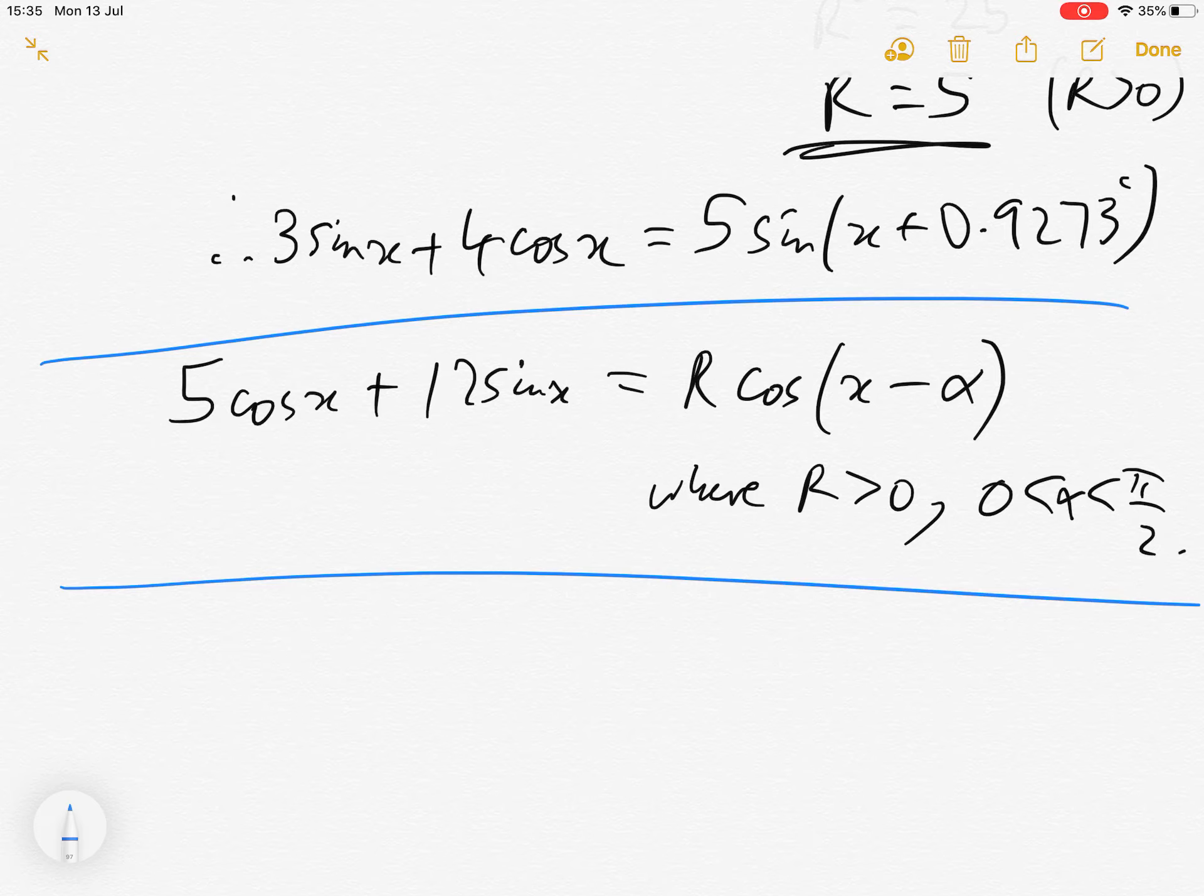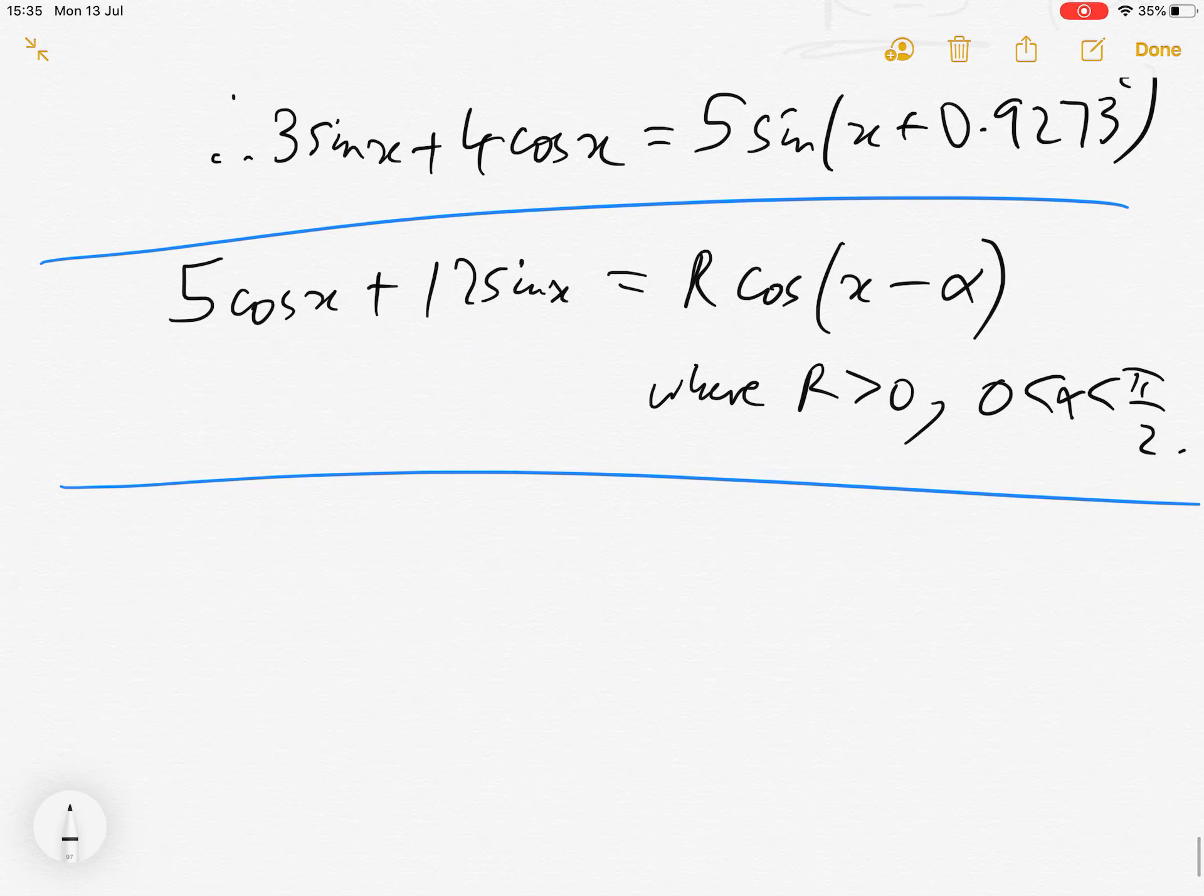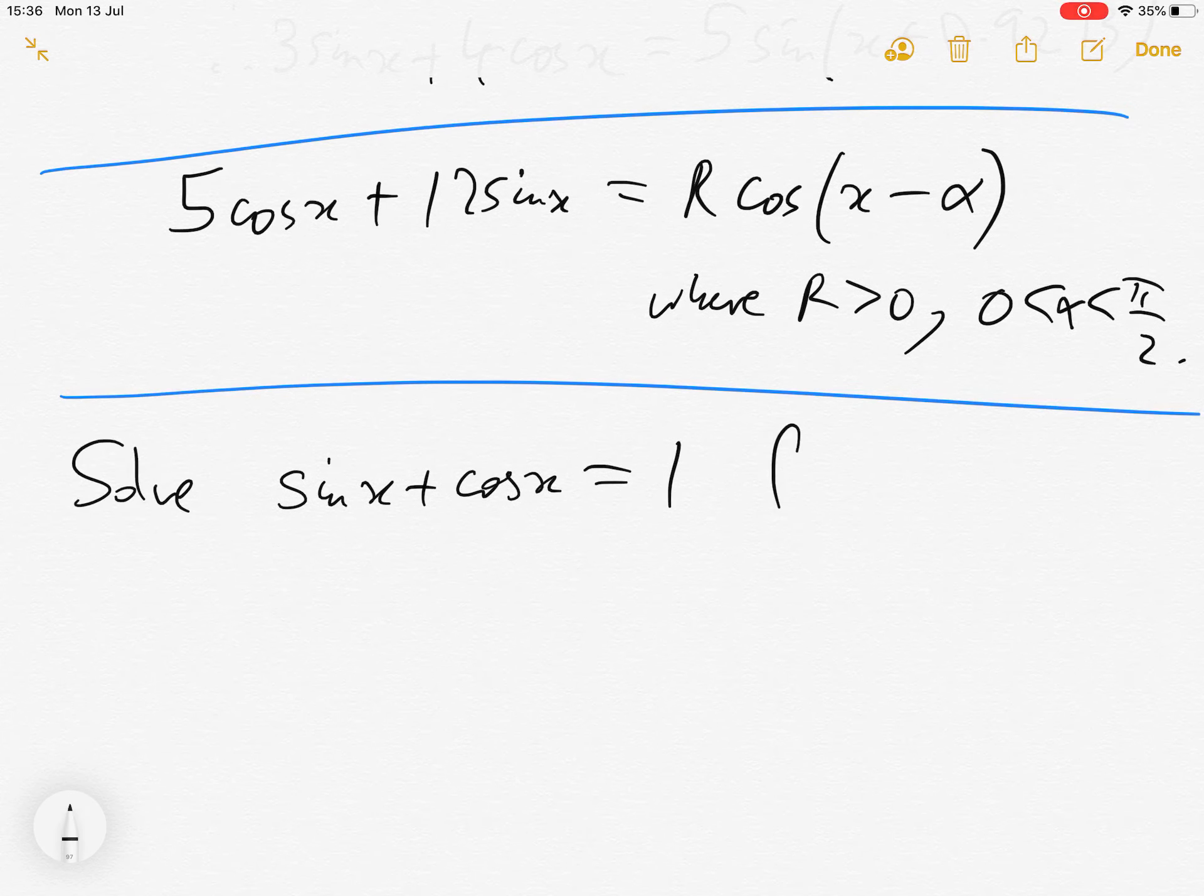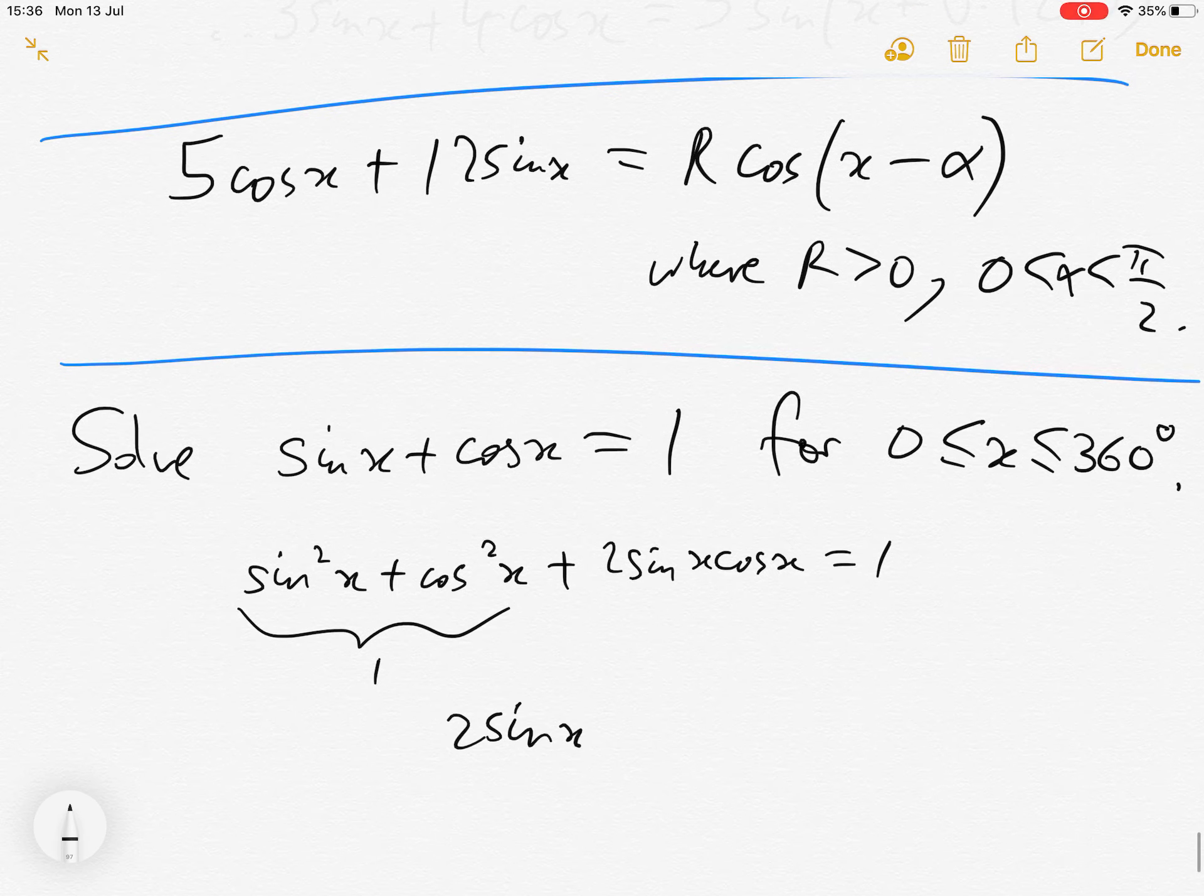And then there are a number of different things we can do with this. We can use it to firstly solve equations because previously, if I'd asked you to solve sin x plus cos x equals 1, how would you have done it? So maybe just pause the video and have a think about it. The question is, solve this for x is between 0 and 360. How would you do it? So without using what we just learned, probably the most sensible thing to do is to square both sides. Because then we get sin squared x plus cos squared x plus 2 sin x cos x equals 1. And then this bit is also 1. So then 2 sin x cos x is 0.